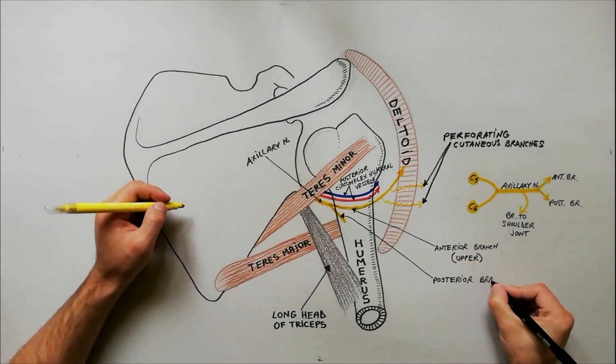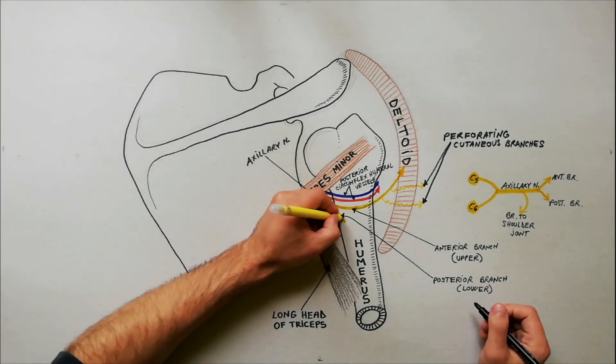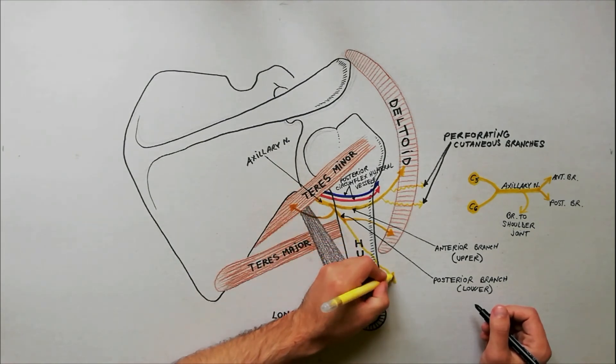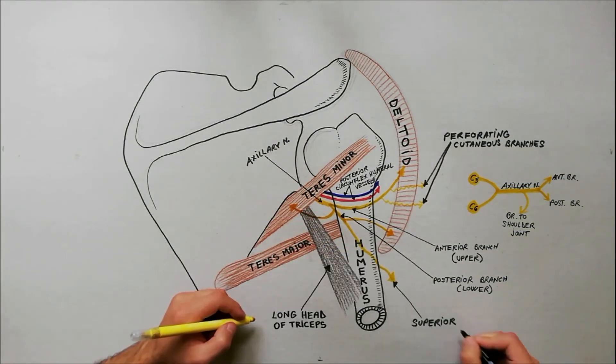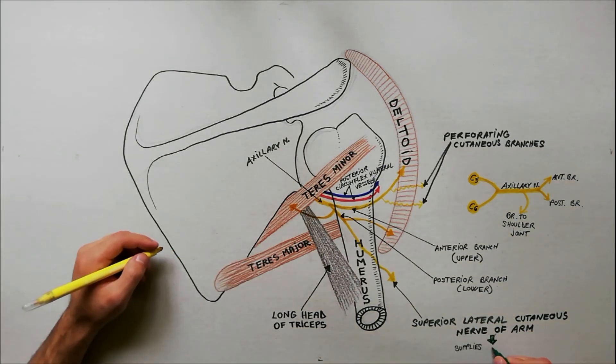The posterior branch supplies teres minor and posterior part of the deltoid. It then pierces the deep fascia and continues as the superior lateral cutaneous nerve of arm, supplying the skin over the lower two-thirds of the posterior part of this muscle.